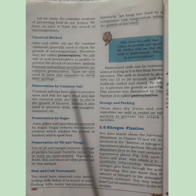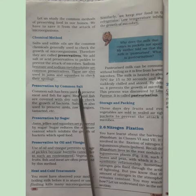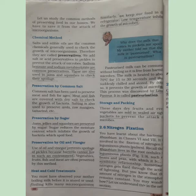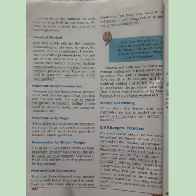Another method is preservation by common salt, also known as sodium chloride or NaCl. It is used to preserve meat and fish. Meat and fish are covered with dry salt to check the growth of bacteria. The salting method is also used to preserve raw mangoes, tamarind, and other food items.